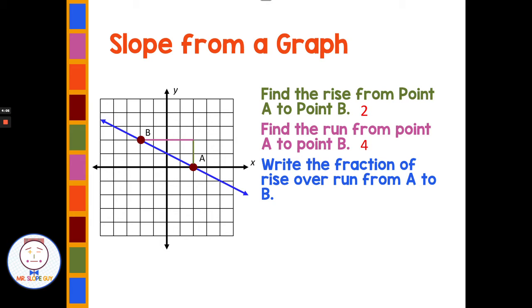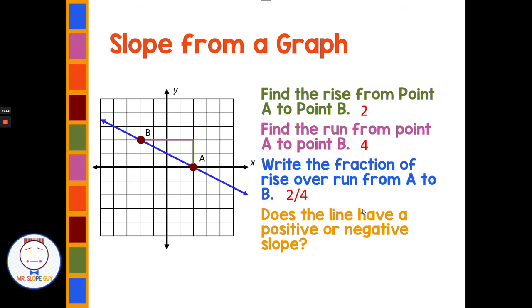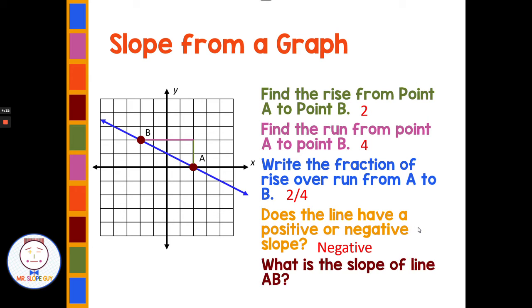Writing the fraction rise over run: my rise was two and my run was four, so I have two-fourths. Does the line have a positive or negative slope? Looking from left to right, it's going down, so we have a negative slope. Putting it all together, the slope of line AB is negative two-fourths, which reduces to negative one-half. We prefer fractions over decimals for slope, and we reduce when possible.